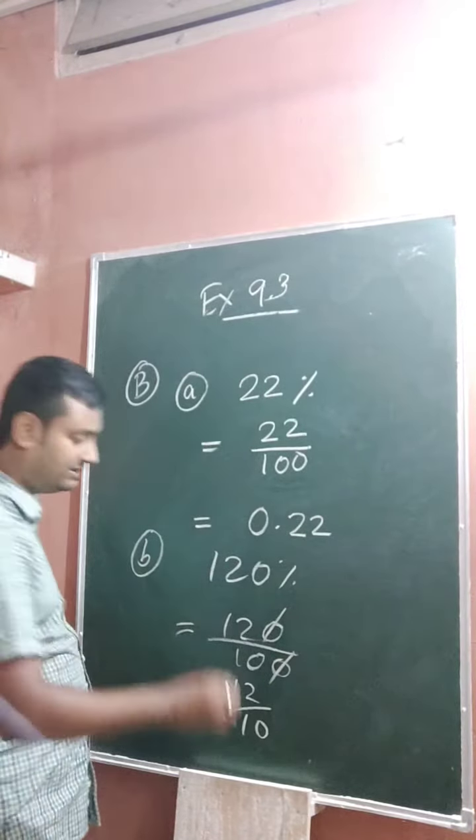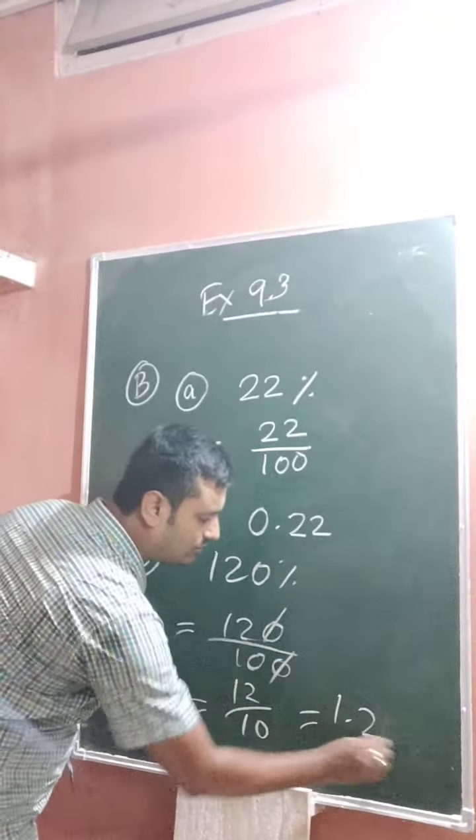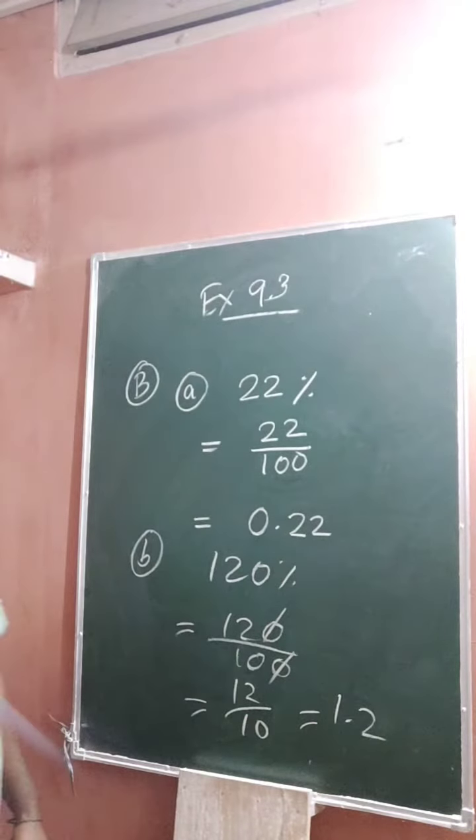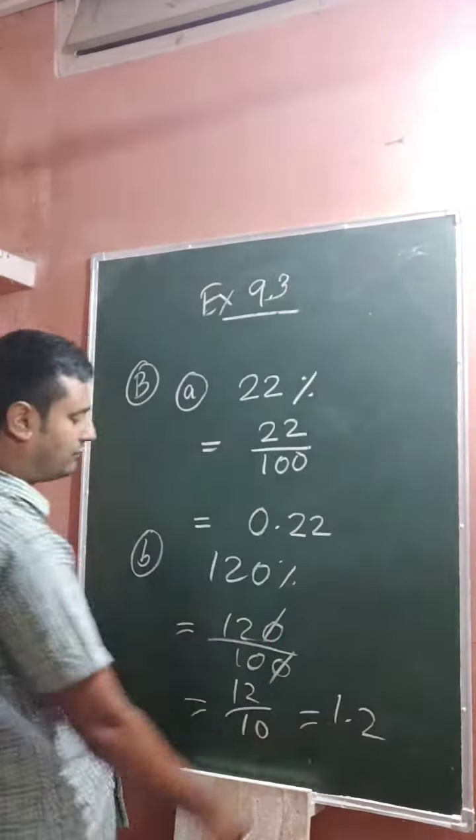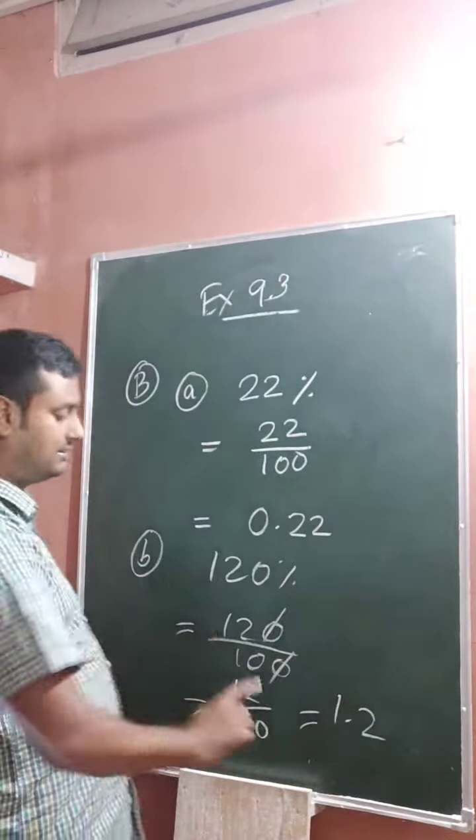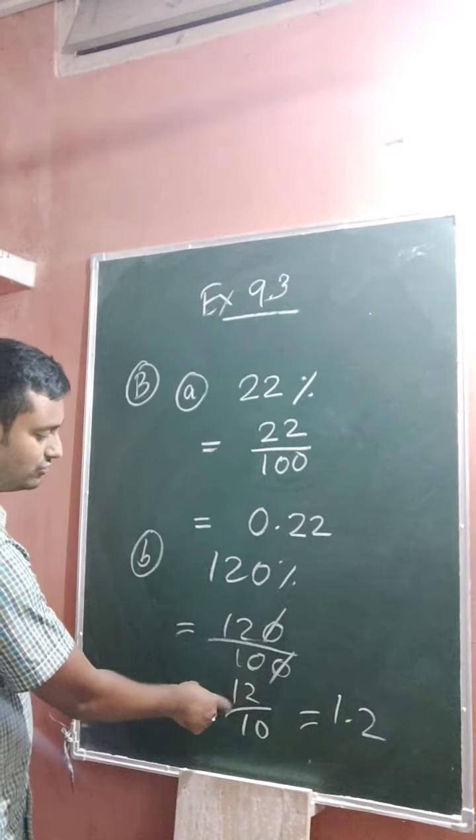That means 1.2. Because numerator is 12, so 12 you can write in that form: after decimal, in the right side there must be one digit. So 12 is written as 1.2.